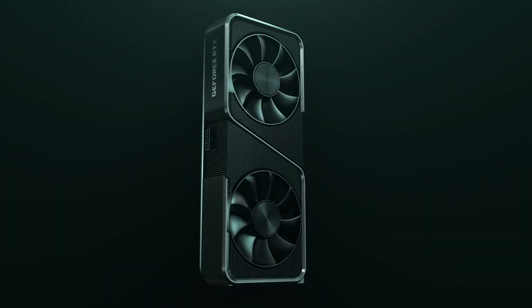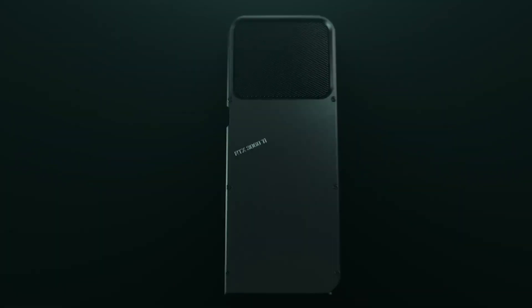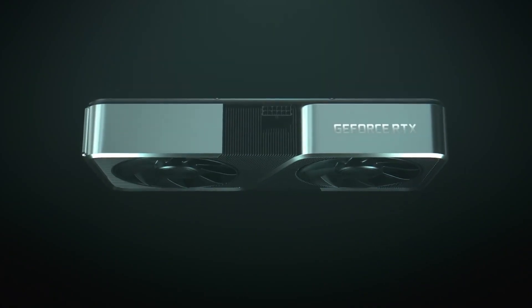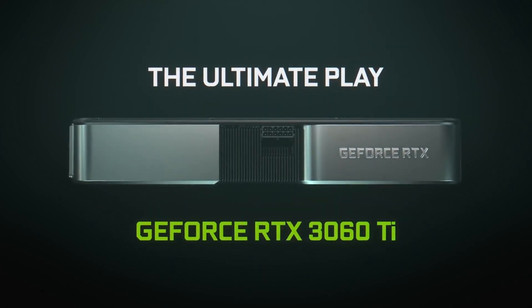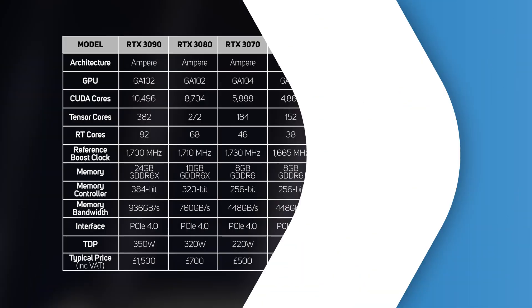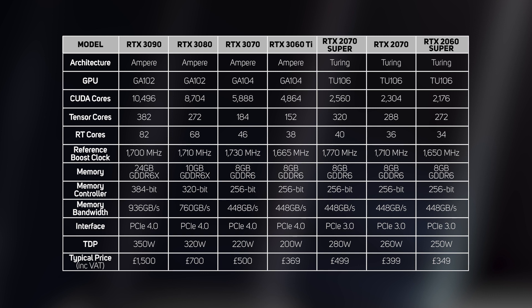After this initial trio of high-priced graphics cards, NVIDIA is now launching a more modestly priced card, the RTX 3060 Ti. As you'd expect from its name, it sits below the RTX 3070, effectively replacing a multitude of previous generation RTX 20 series cards. Like its bigger sibling, the RTX 3060 Ti is based on the Ampere architecture, albeit a cut-down version called GA104.